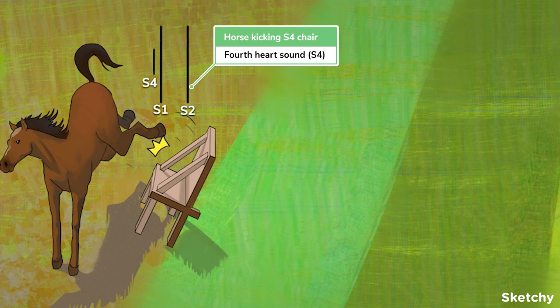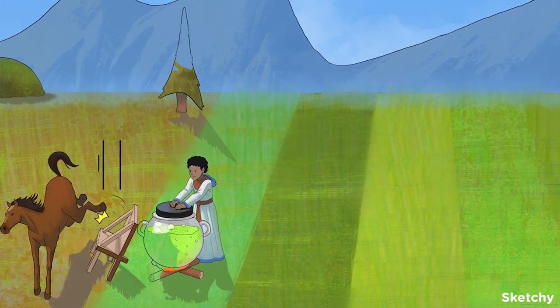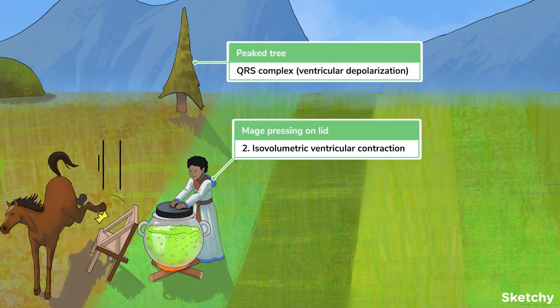If S4 is heard, it is always considered abnormal and may be indicative of ventricular hypertrophy. The next phase is isovolumetric ventricular contraction, which begins during the QRS complex. See this QRS-like tree in the background.